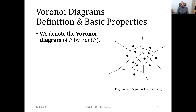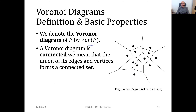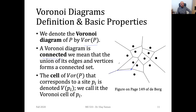The Voronoi diagram is represented simply as Vor(P), and it is a connected graph. All the vertices and edges are connected to each other. The cell for a specific site PI is represented as V(PI), while the whole Voronoi diagram is represented as Vor(P).